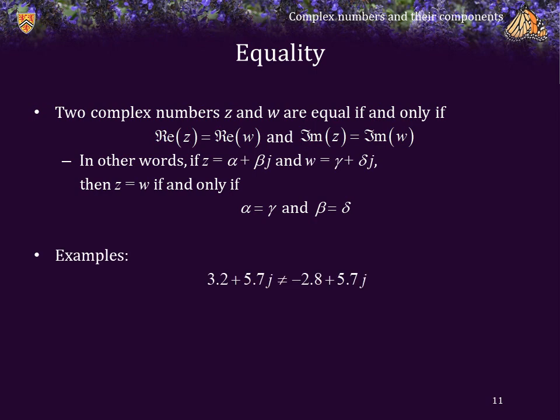For example, two numbers are not equal if their real components are not equal. Two complex numbers are not equal if their imaginary components are not equal. Two numbers are not equal if the imaginary component on one side is 0 and the other is 5.7. And two numbers are not equal if the real component of one side is 0 while the other is 3.2.